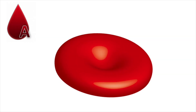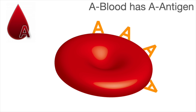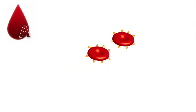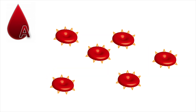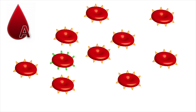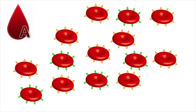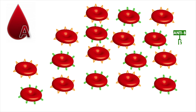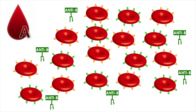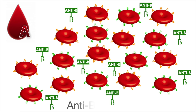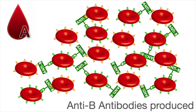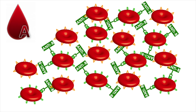Let's take A blood as our first example. A blood has the A antigen on the cell membrane, and antigens are simply proteins that exist on our cell membranes that are used in recognition. If A blood is exposed to B blood, which has the B antigen on its cell membrane, it will elicit an immune response producing anti-B antibodies that will attack the B blood cells and cause clotting or clumping.